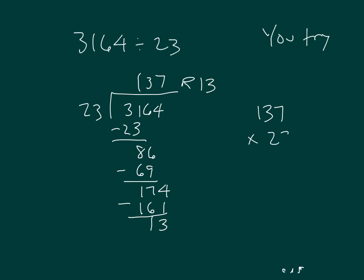Did you run a check? One hundred thirty-seven times twenty-three, and we'll add in the thirteen. Three times seven is twenty-one — one, regroup of two. Three times three is nine, plus two is eleven — one, regroup of one. Three times one is three, plus one is four. Place a zero. Two times seven is fourteen — four, regroup of one. Two times three is six, plus one is seven. And two times one is two.